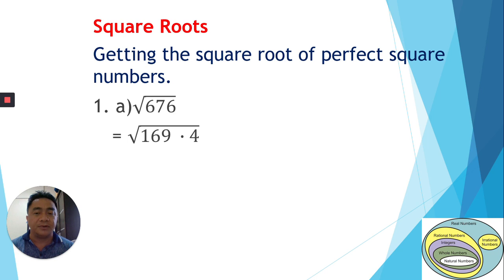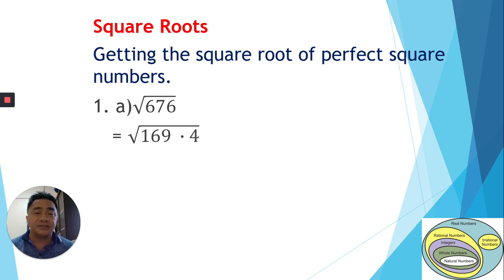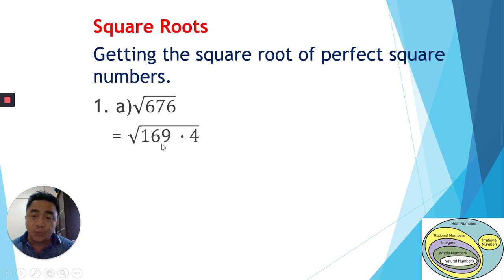We know that 169 is a perfect square number and its square root is 13. For 4, the square root is 2. Now, remember that for square roots we need to write numbers with a power of 2, so that we can extract the number out of the radical sign — we change the number into a form containing power 2.